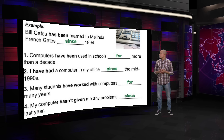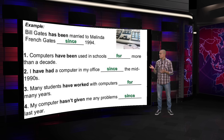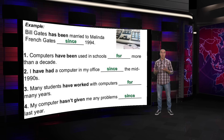Number three: Many students have worked with computers for many years. You can replace subjects — many people, many painters — and it works the same way. 'For many years' could be four years or twenty years, so there is not a definite number, the information is not accurate. That's why you use FOR — it expresses duration in time.